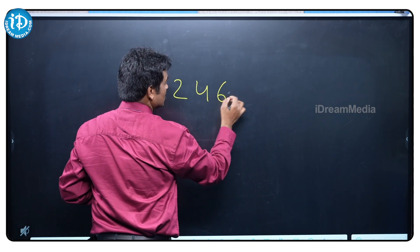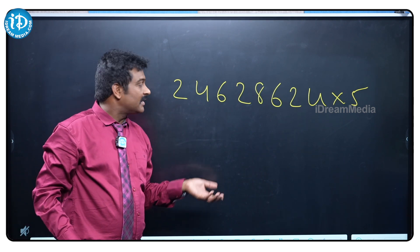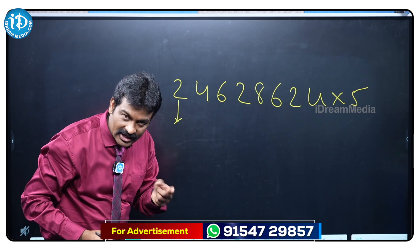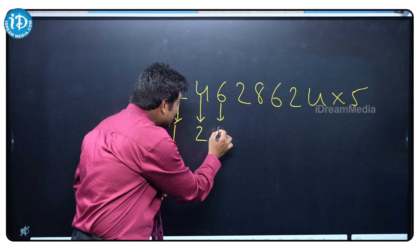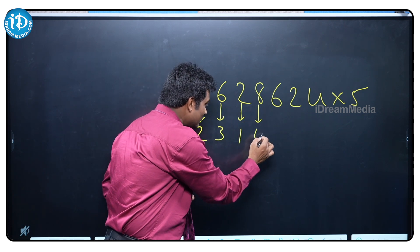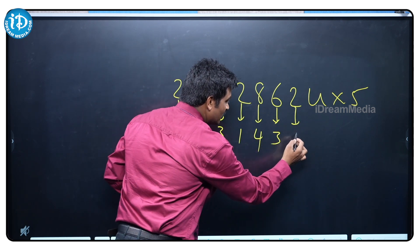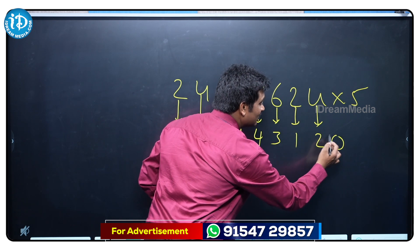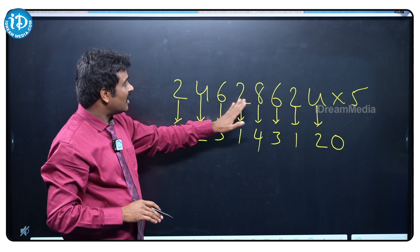2468624 into 5. The problem is too big now. In this particular scenario, same technique I want to apply. Half of 2 is 1, half of 4 is 2, half of 6 is 3, half of 2 is 1, half of 8 is 4. Attach a 0, that's it. This is your answer. No need to multiply the numbers because these are all even numbers.